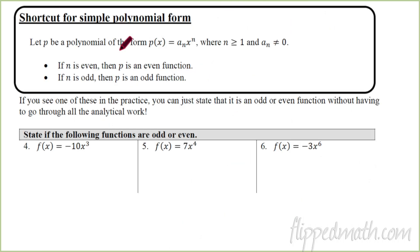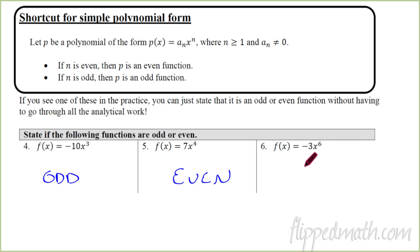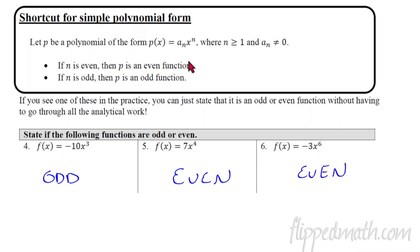What did we find when we looked at simple polynomials? If we have a polynomial in the form a_n times x to the n, where n is greater than or equal to 1 and a_n is not zero: if n is even, then p is an even function; if n is odd, then p is an odd function. This means if you have a polynomial with only one term, you can just look at the exponent — if the exponent is odd, it's odd; if even, it's even. This works whenever you have one term and only one term. Easy peasy — exponent's odd: odd. Even: even. And we're all done.